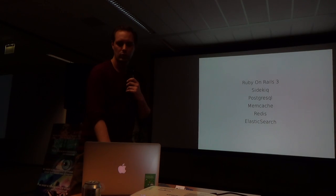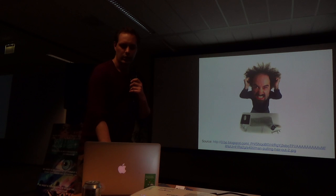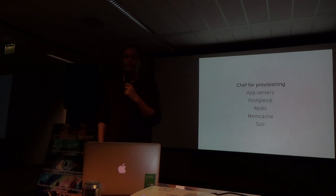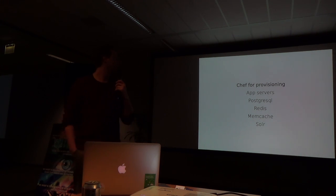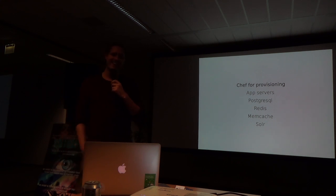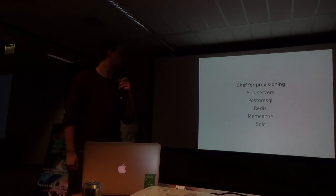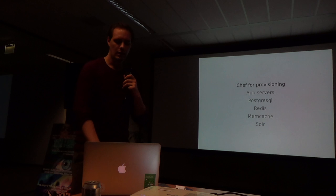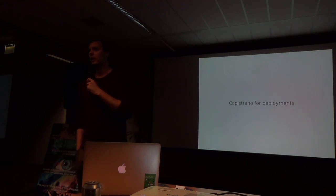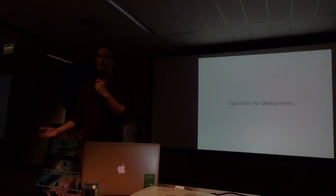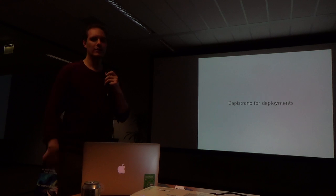Up until about three months ago, we were using a very complex infrastructure using Chef for provisioning — our app service, Postgres, Redis, everything was provisioned by Chef running on Rackspace on our virtual private servers. We were using Capistrano for deployments. Basically in our company it was one person that knew how this all worked, and it was a big codebase for Chef that was really impossible for anybody else to get into. It was all kind of intuition-based. So we decided this had to change.